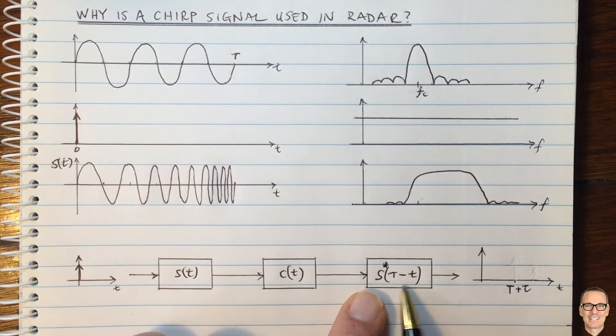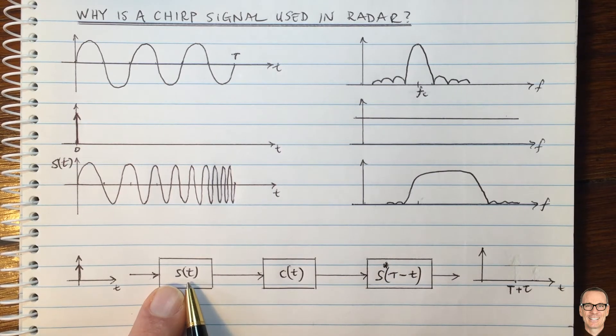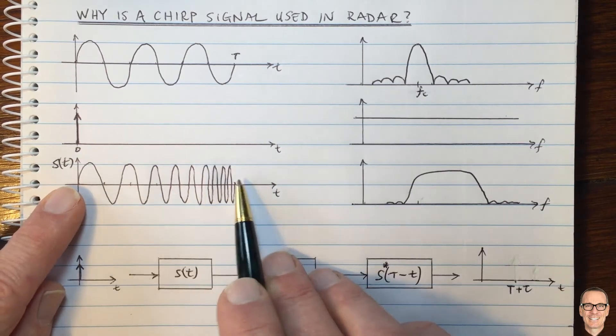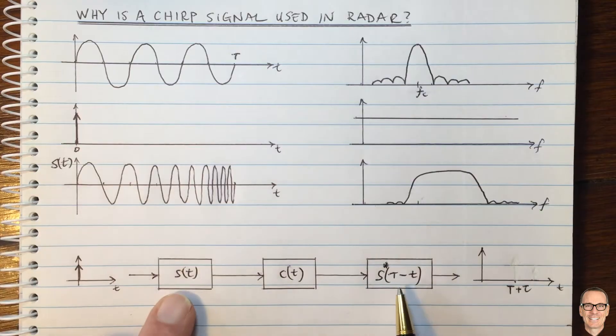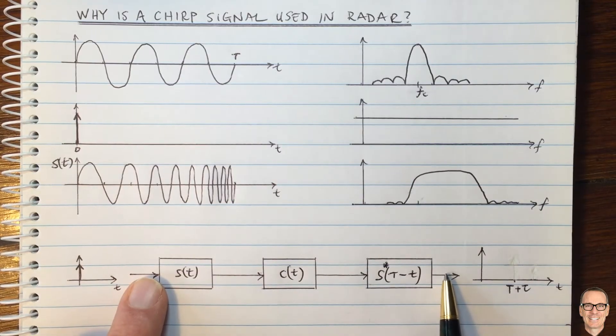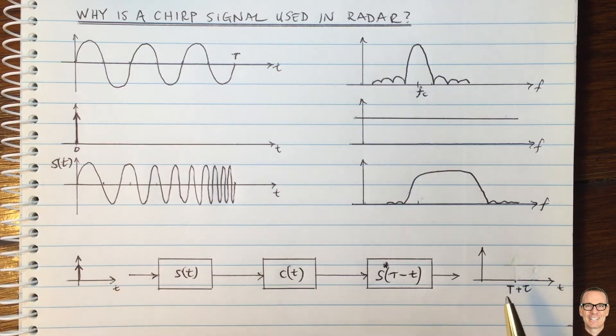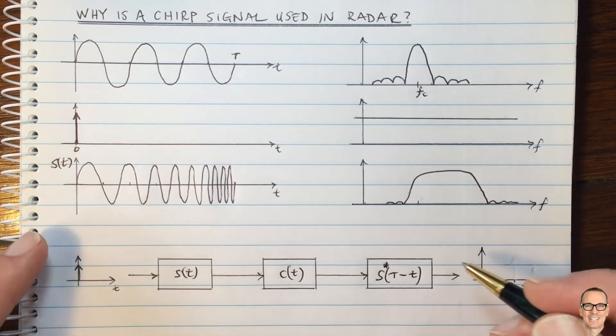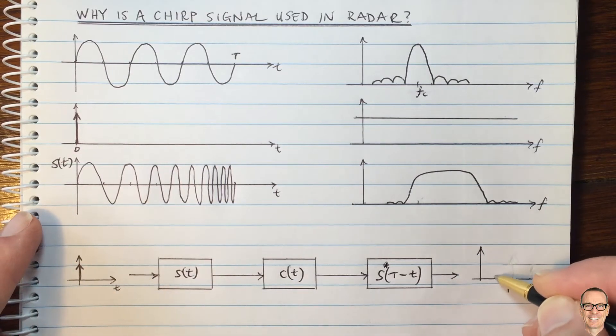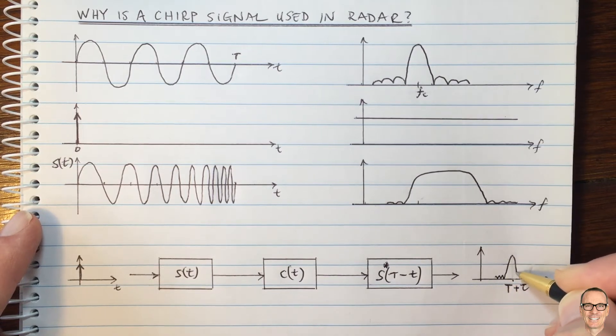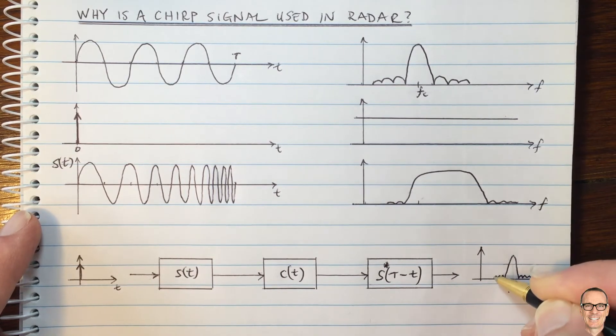And this is done by a receive filter, which is a time reversal and complex conjugate of the transmit CHIRP function. So the overall effect will be that all the frequencies end-to-end will be delayed by the same amount. Now, it's not exactly the case that you recover an impulse. You actually recover something that is a little bit more like a sinc function, not exactly an impulse.